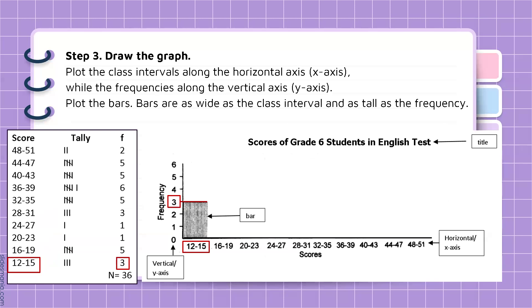Step 3 is to draw the graph. Plot the class intervals along the horizontal axis or the x-axis, while the frequencies along the vertical axis or the y-axis.